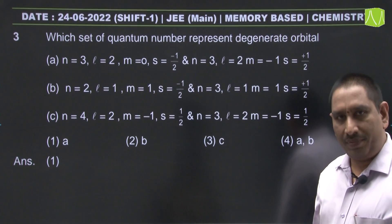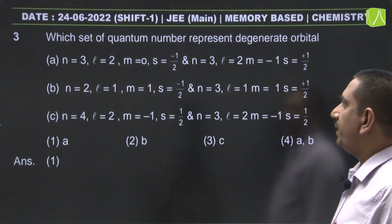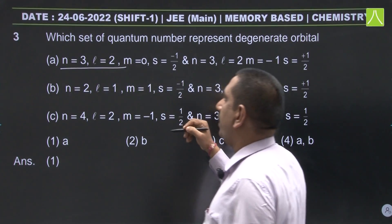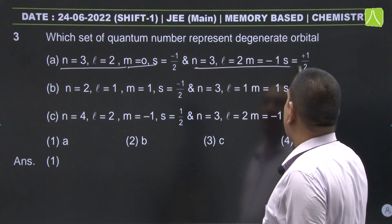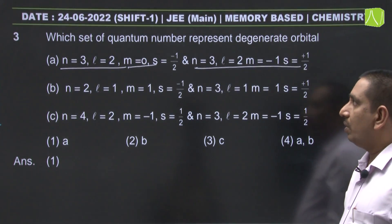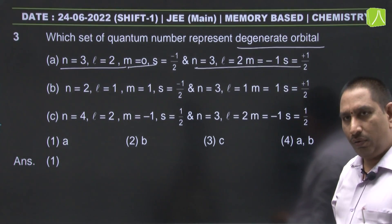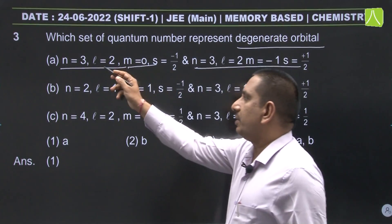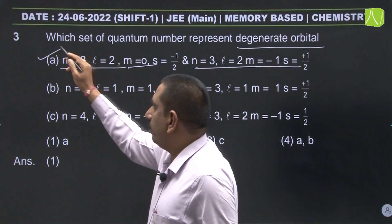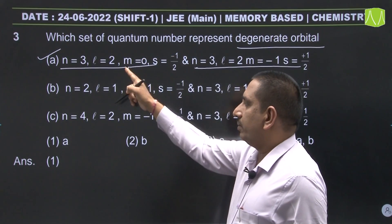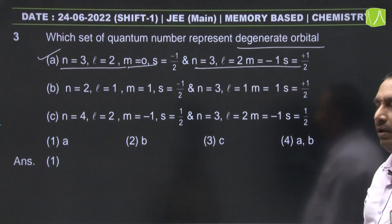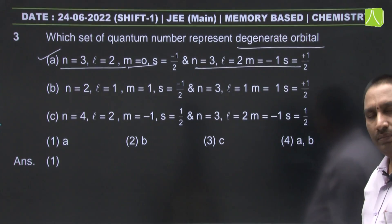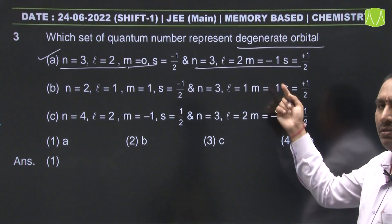The next question from atomic structure is related to quantum numbers: which set of quantum numbers represents degenerate orbitals? Here, n=3, l=2, m=0 and n=3, l=2, m=−1 are given. Degenerate orbitals have the same n and l values but different m values. The main condition is that n and l values should be the same while m values are different. These two sets form degenerate orbitals; in other options, n and l values are different.